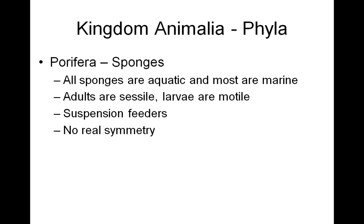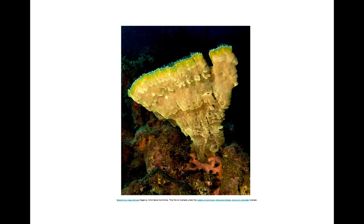Let's move into each phylum and take a look at its distinguishing characteristics. First we have phylum Porifera — the sponges. All sponges are aquatic and most are marine. Adults are sessile, meaning they are anchored into a substrate and don't really have any motility, but the larval form are motile. Sponges are suspension feeders, meaning they filter out food from the water that moves through their pores. And they have no real symmetry. Here's an example of a sponge — take a look because you'll have a lab activity next where you will have to classify various animals into their respective phyla.